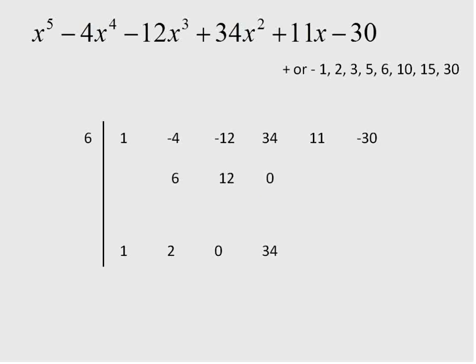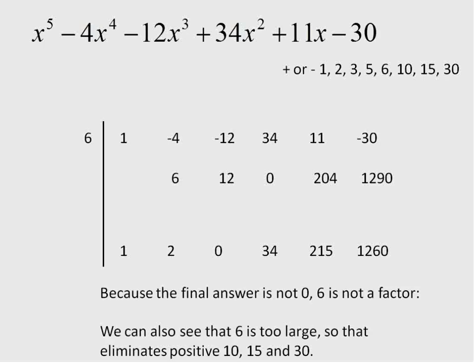And we're going to repeat this process. I'm going to take 6 and multiply it times 2, that will give me 12. Negative 12 plus 12 gives me 0. Perfect. Now I do that again. 6 times 0 gives me 0. 34 plus 0 is 34. And I continue. 6 times 34 gives me 204. 204 plus 11 gives me 215. 6 times 215 gives me 1,290. Minus 30 gives me 1,260.